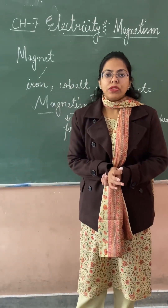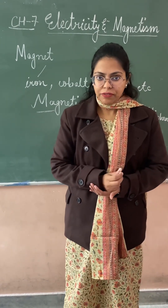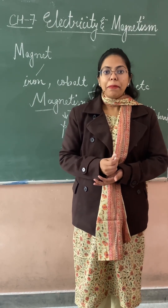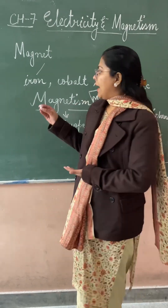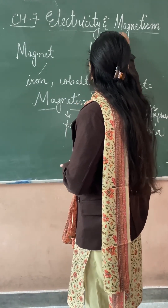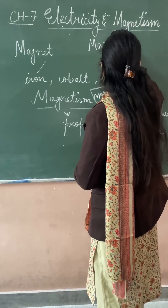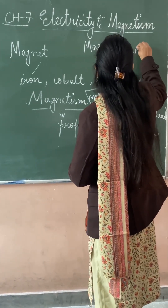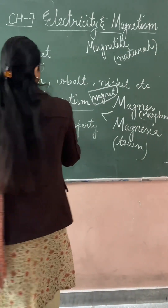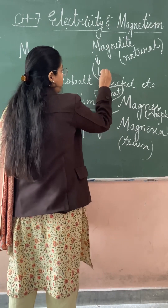What is a Natural Magnet? The magnet which occurs naturally from the Earth's surface is known as a Natural Magnet. For example, Magnetite. Magnetite is the natural magnet. It is also known as Lodestone, since it is capable of telling directions.